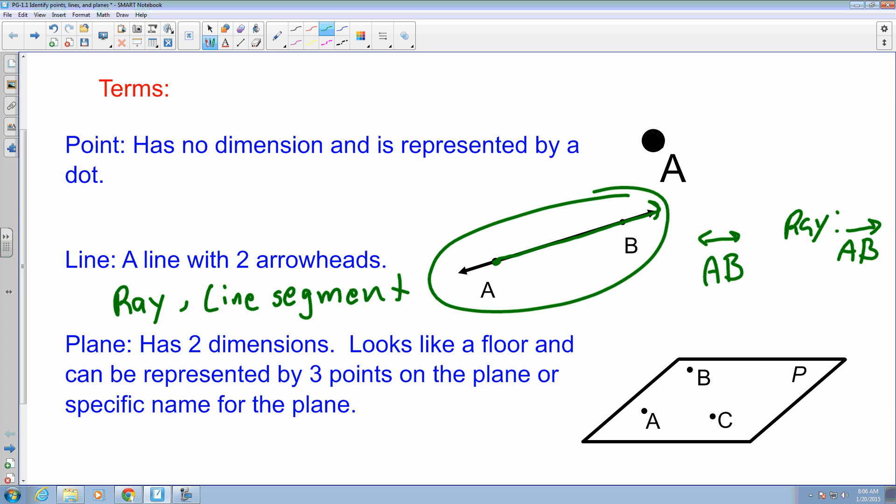So if I were to erase this here and say, alright, I got A, B, and there's a stopping point here and stopping here and I can measure this. The line segment has two specific endpoints.